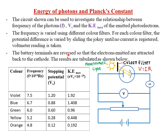The battery terminals are reversed so that the electrons emitted are attracted back to the cathode. The positive terminal is connected to the cathode of the photocell and the negative terminal to the anode. Once light hits the cathode, electrons are emitted but immediately attracted back because the cathode is connected to the positive terminal. The electrons cannot move to the other plate because it is connected to the negative terminal, and like charges repel.